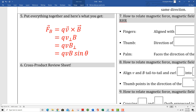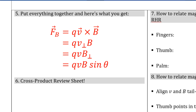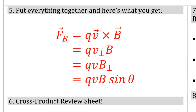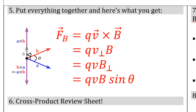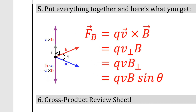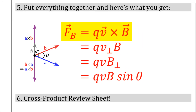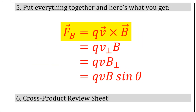It turns out all of the behaviors described in box four can be summarized by a cross product. Remember, the cross product is the product of perpendiculars. The first equation in box five shows the vector relationship between the magnetic force, the electric charge magnitude, the velocity vector, and the magnetic field vector. The last three equations give you basically the magnitude-angle version of the cross product.